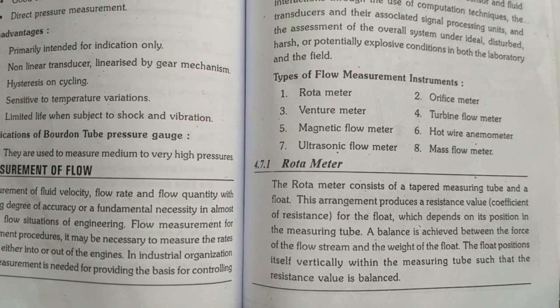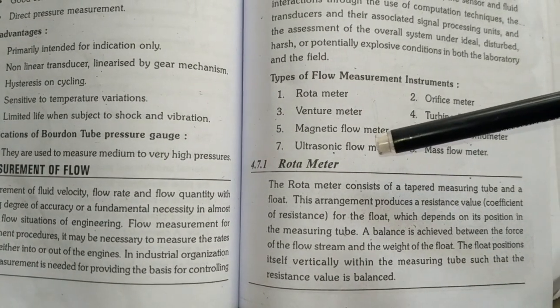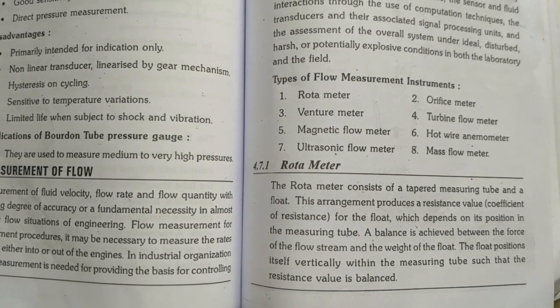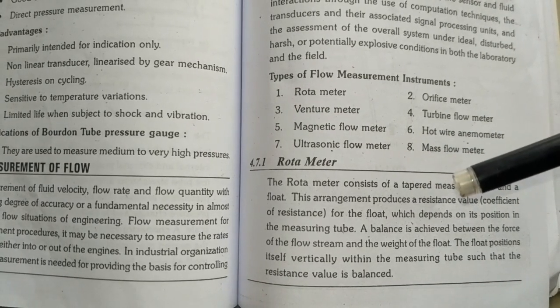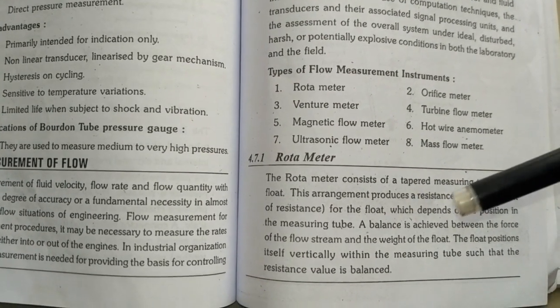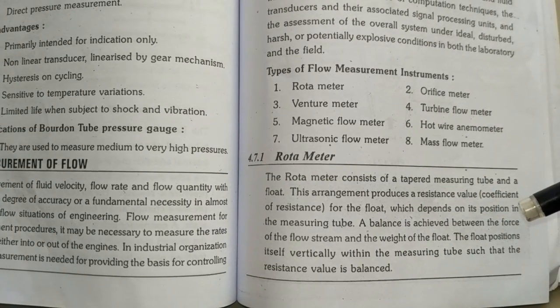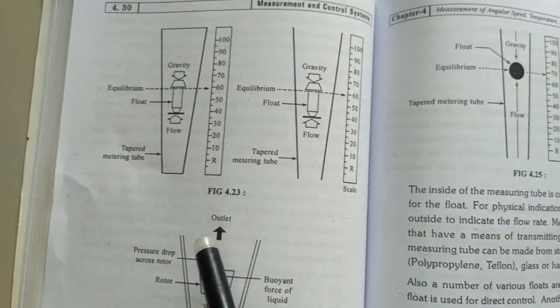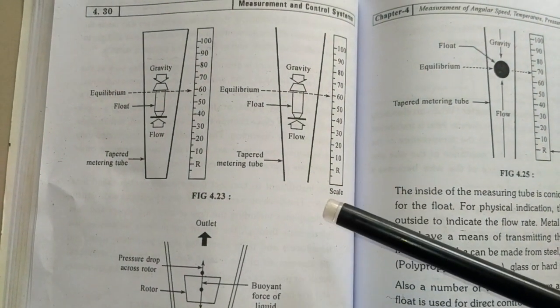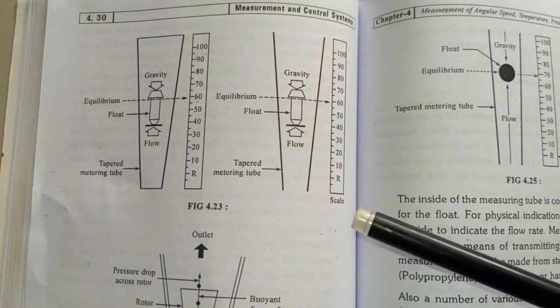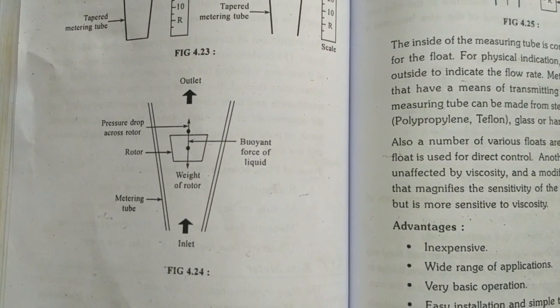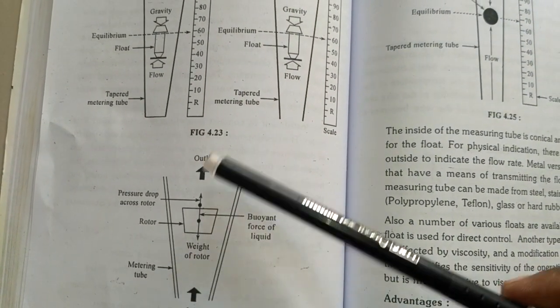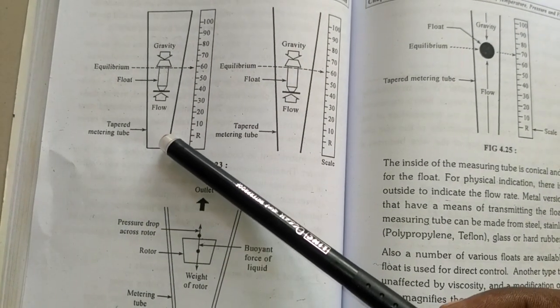The rotameter consists of a tapered measuring tube and a float. This arrangement produces a resistance value for the float which depends on its position in the measuring tube. Here we have a tapered meter tube and flow is in this tube.